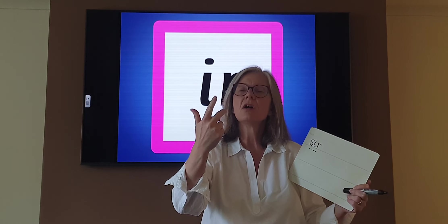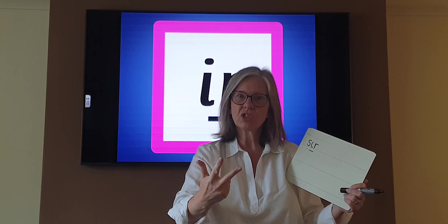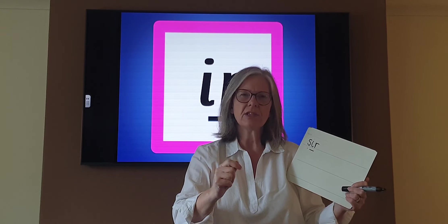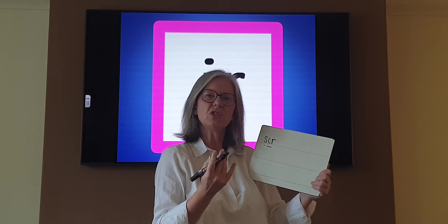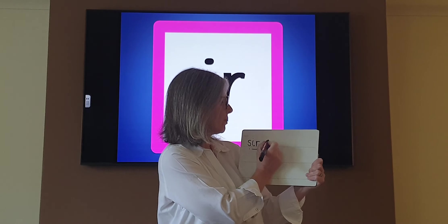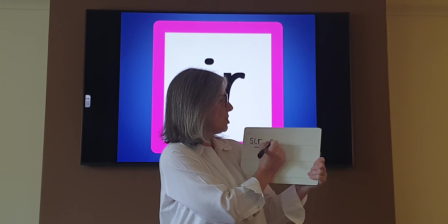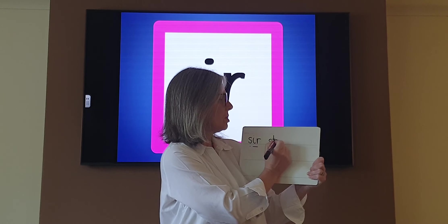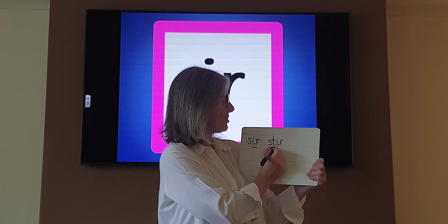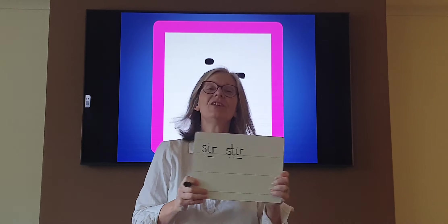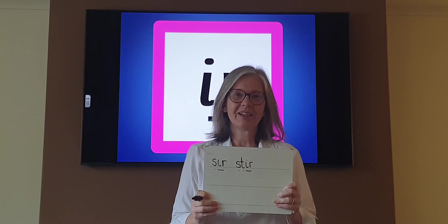S, T, IR — stir. Did you hear that T? Let's try it again. Stir — S, T, IR, stir. See if you can write it down. Remember, sound talk it as you're writing it. Stir. I'm going to have a go: S, T, IR. Sound button it to check it — S, T, IR, stir. Give it a tick.